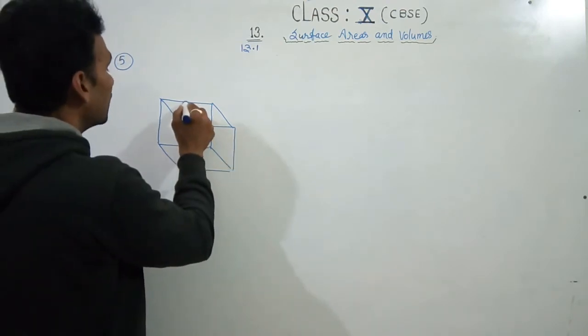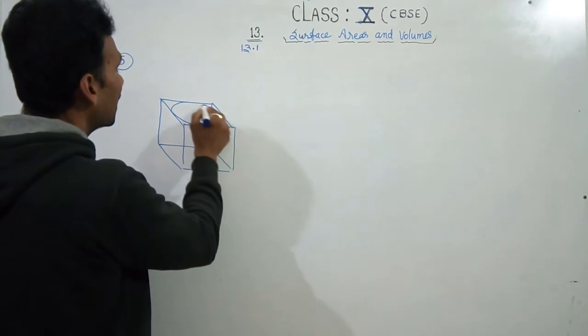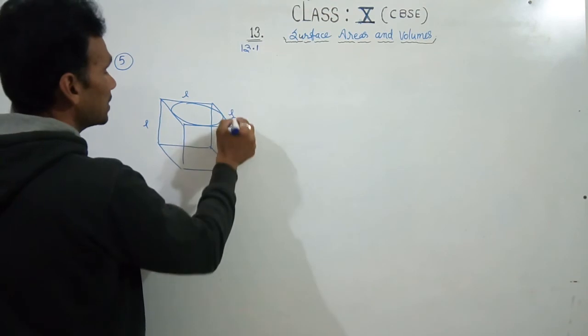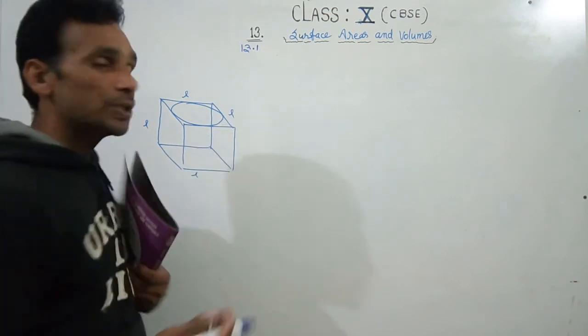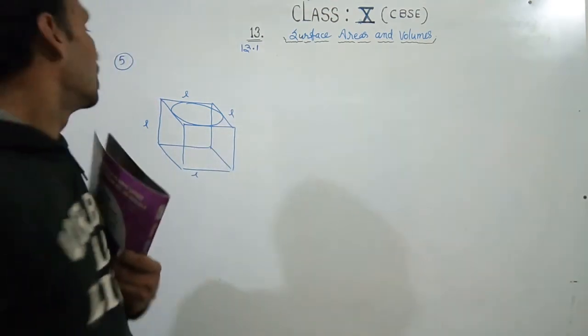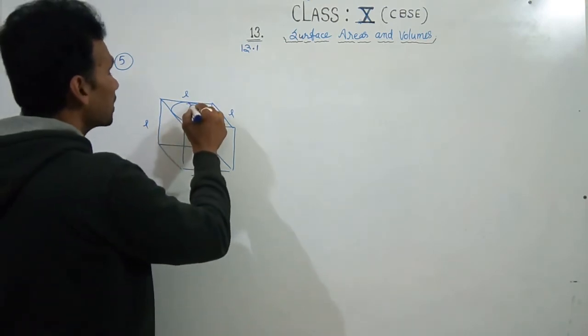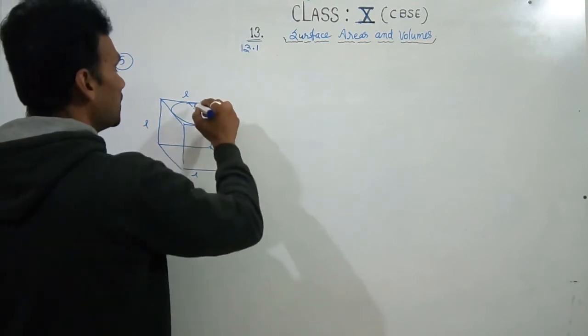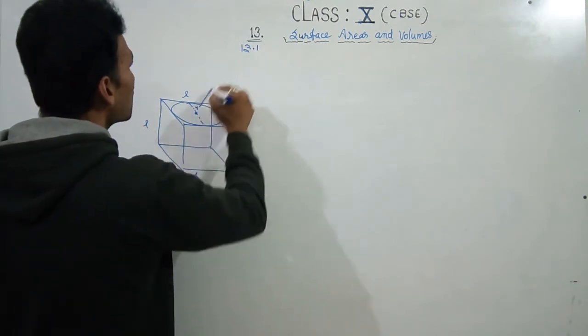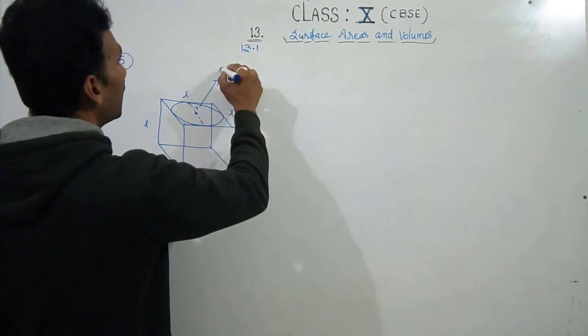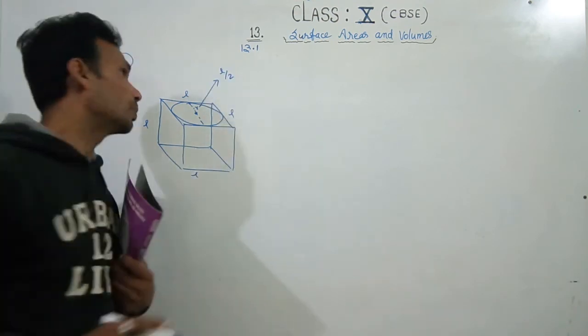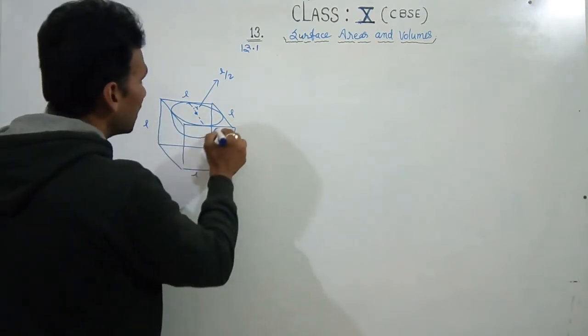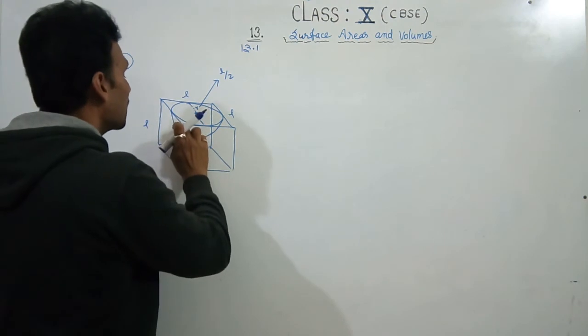So the cubical wooden block - its side is L. This is L, this is L, this is L, because all sides are equal. The hemisphere depression has this diameter, so r equals L upon 2. And then we made the hemisphere go inside.